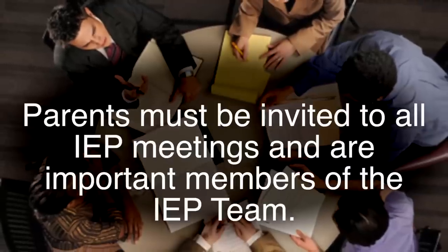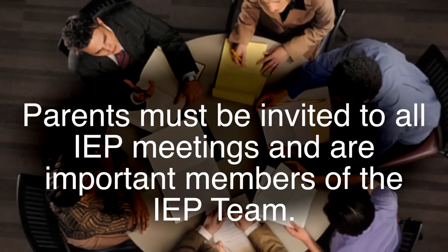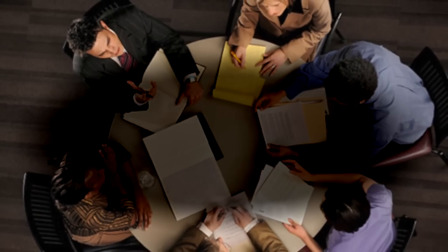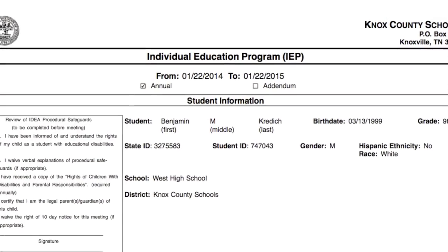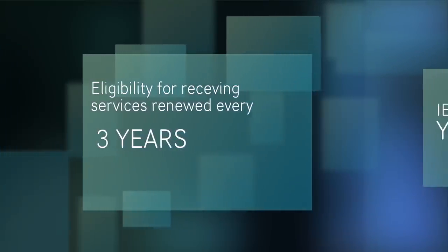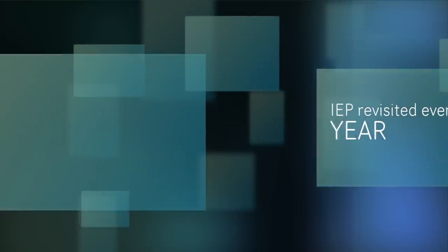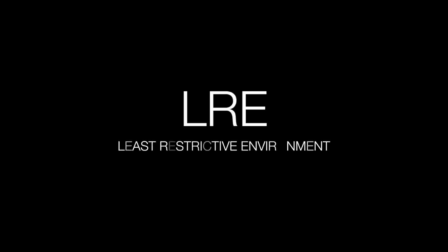The school administrator, a general education teacher, a special education teacher, and an evaluator are the people required to be involved in creating the IEP. Many other people who have knowledge of the child can also be involved. A student's eligibility for receiving special education services has to be renewed every three years, and the IEP is required to be revisited every year. IDEA also introduced the important concept of Least Restrictive Environment, or LRE.